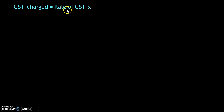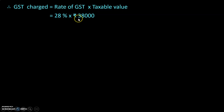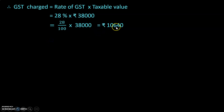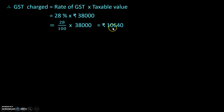GST charged equals rate of GST multiplied by taxable value. The rate of GST is 28 percent and the taxable value is ₹38,000. Calculating: 28/100 × 38,000 gives us ₹10,640. This is the amount of GST we have to pay. It is a luxury item, which is why the rate of GST is very high.